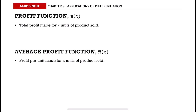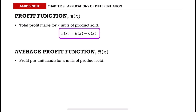The profit function is denoted as π(x). It is the total profit made for x units of product sold. The profit function equals the revenue function minus the cost function.